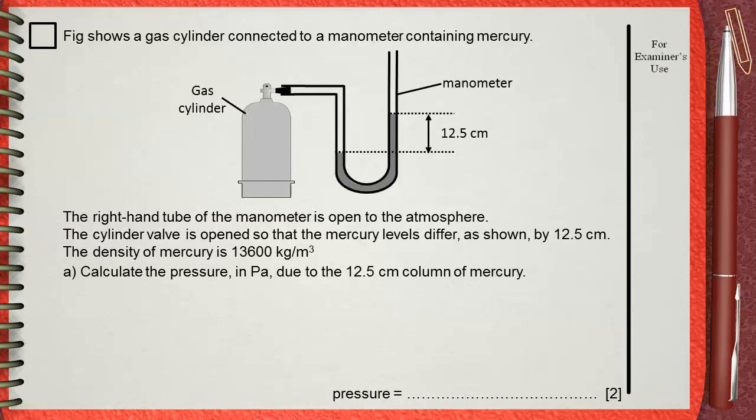Figure shows a gas cylinder connected to a manometer containing mercury. The right hand tube of the manometer is open to the atmosphere. The cylinder valve is open so that the mercury levels differ as shown by 12.5 centimeters. The density of mercury is 13,600 kilograms per meter cube.